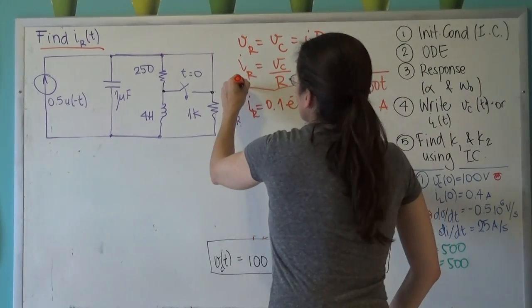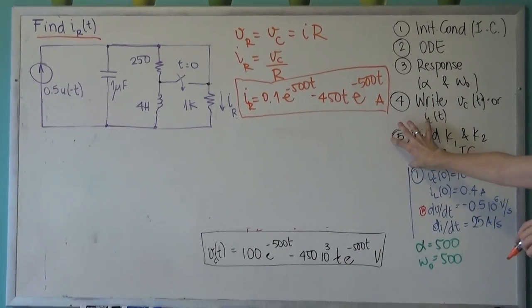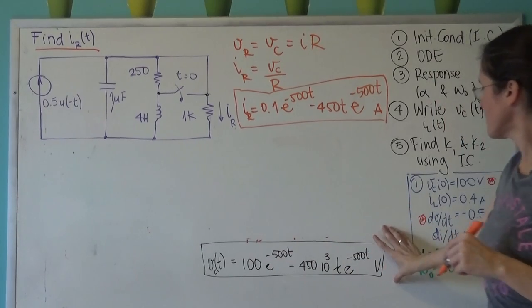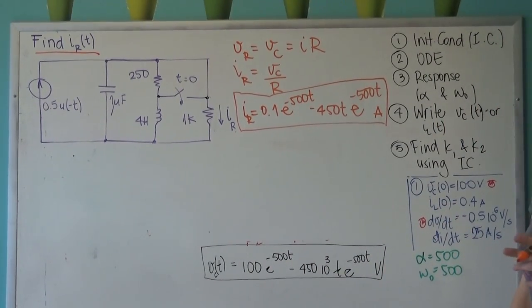This is the answer to the problem. This is our step five when we find k1 and k2 for VC and then use that to find the problem. I hope you guys got this.